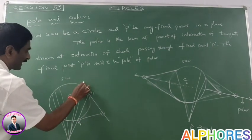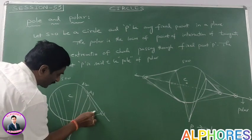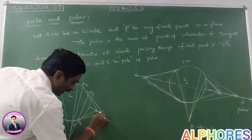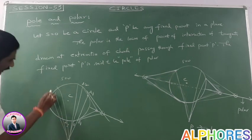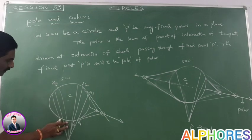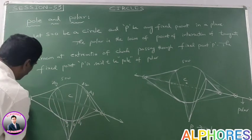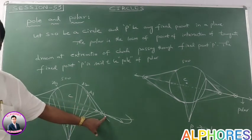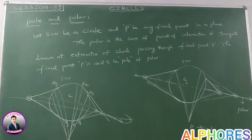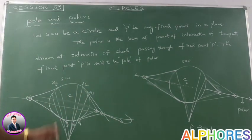Similarly, suppose another chord intersects the circle at A2, B2. The tangent at those endpoints meets at another point. For yet another chord at A3, B3, the tangents meet similarly. By joining all of these intersection points, we get a line. That line is said to be a polar. The locus of point of intersection of tangents drawn at extremities of the chords is said to be a polar. The fixed point P is said to be pole.